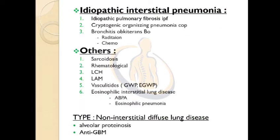Point 3: idiopathic interstitial pneumonia. It includes idiopathic pulmonary fibrosis (IPF), cryptogenic organising pneumonia (COP), bronchiolitis obliterans (BO) which includes radiation and chemo. Others include sarcoidosis, rheumatological conditions, LCH, LAM, vasculitides, GPA and EGPA. Eosinophilic interstitial lung diseases — that is ABPA and eosinophilic pneumonia.